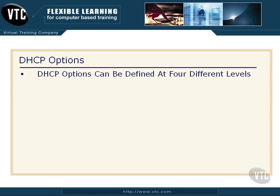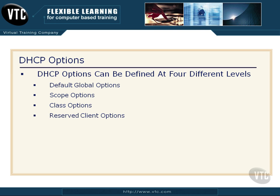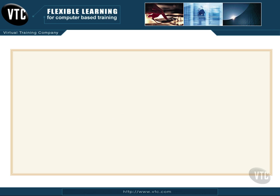DHCP options can be defined at four distinct levels, and you need to be familiar with these on the exam. The first level is default global options, then scope options, class options — I haven't mentioned classes yet, I'll explain them in just a moment — and then reserved client options.